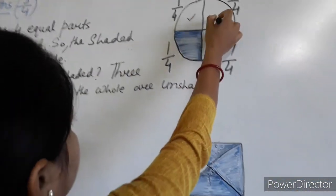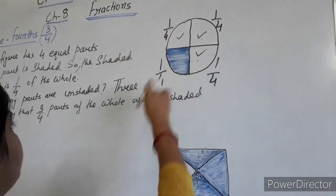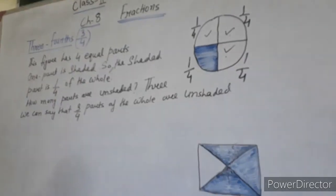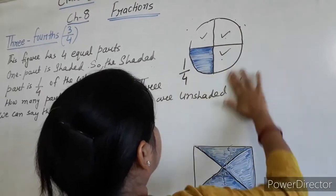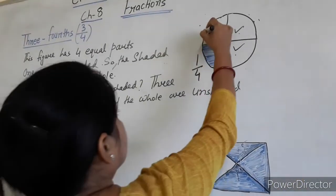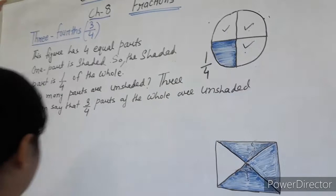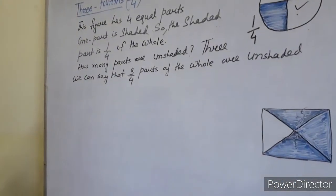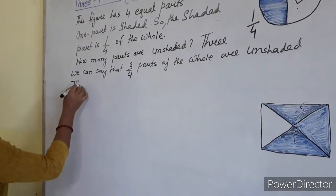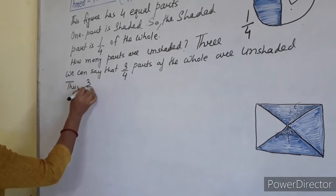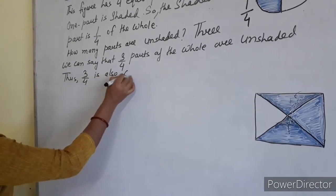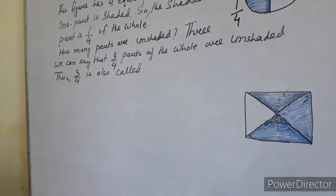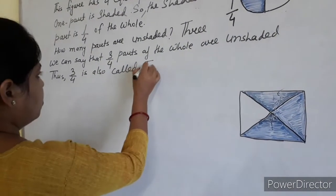How many parts are unshaded? 1, 2, 3. So 3 by 4th of the whole are unshaded. Then, 3 by 4th is also called 3 fourths.